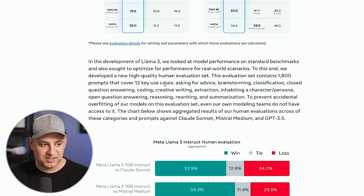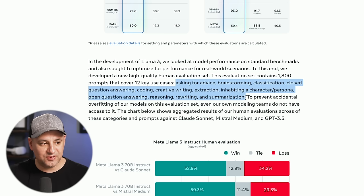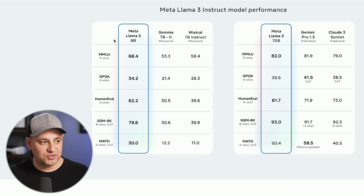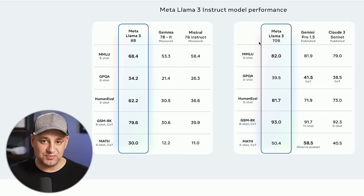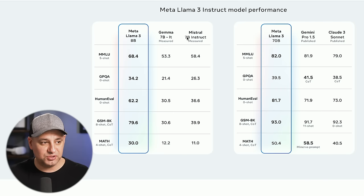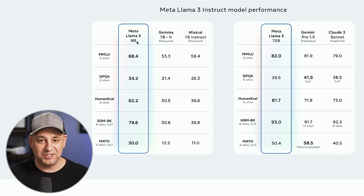They used 12 key use cases for their benchmark — asking for advice, brainstorming, classification, and others listed in their blog post. Here's a closer look at the benchmark: this is Llama 3 with the 8B model and the 70B model. They compared the 8B model against Google's Gemma model and Mistral, both open source models — something comparable to what Llama is.